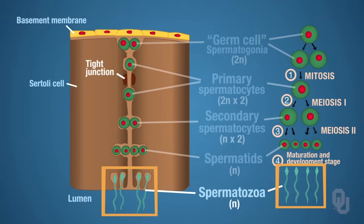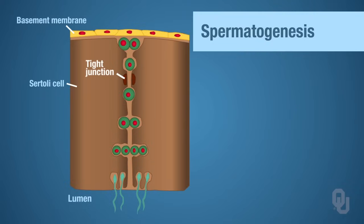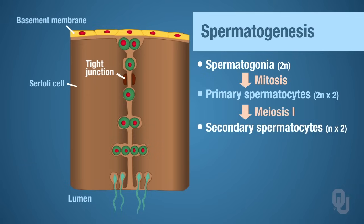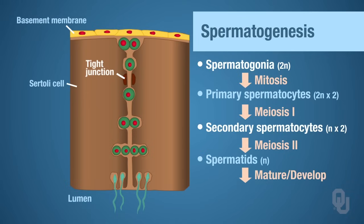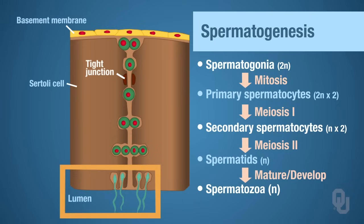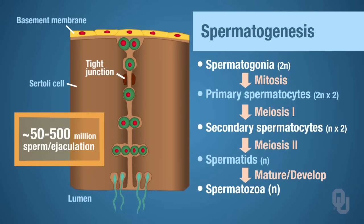This is your gamete — the male gamete. This process, spermatogenesis, began with the spermatogonia: mitosis took place to produce primary spermatocytes, then meiosis I occurred to produce secondary spermatocytes, then meiosis II occurred to produce spermatids, and then the spermatids matured and developed into spermatozoa. All of this process was occurring as the cells were migrating from the basal compartment toward the luminal compartment. Once the process is over, the sperm are in the lumen of the seminiferous tubule. Approximately 50 to 500 million sperm are ejaculated per ejaculation.